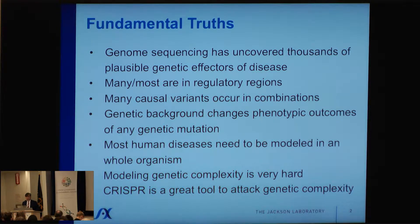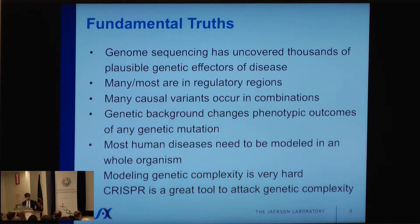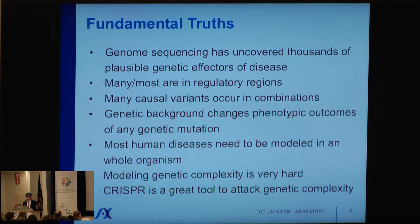I'd like to start with what I consider are fundamental truths that my talk will be based on. First of all, genome sequencing, particularly human genome sequencing, has uncovered thousands of plausible genetic factors of disease. Many, or if not most, of them are in regulatory regions, causing some issues around how you transfer that into a model system. The causal variants occur in combination, so you're talking about combinatorics on a grand scale, and expanding that to the entire genome of different strains and species, you have a genetic background problem of a multitude of variances affecting phenotypic outcomes.